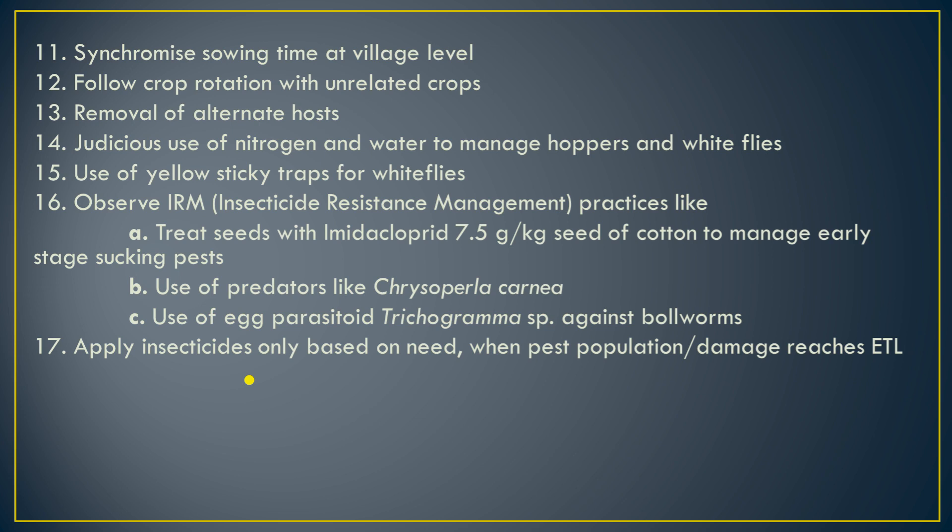Use yellow sticky traps for whiteflies. Observe IRM — insecticide resistance management. Treat seed with imidacloprid 7.5 gram per kg seed of cotton to manage early-stage sucking pests that appear right after germination. Use predators like Chrysoperla carnea. Also use parasitoids like Trichogramma and larval parasitoids like braconids — these can be mass-released in the field.